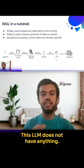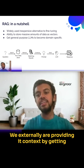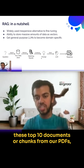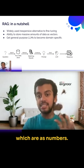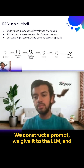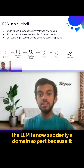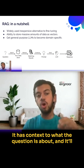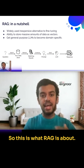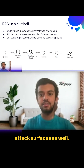It will return those matching results, construct a prompt based on them, and send it to a naive LLM. This LLM is not a domain expert — it's just a general LLM. But we externally provide it context by retrieving the top 10 document chunks from our PDFs, converting those vectors back to text, constructing a prompt, and giving it to the LLM. The LLM then becomes a domain expert because it has the relevant context. This is what RAG is about — it's widely used and is also one of the biggest attack surfaces.